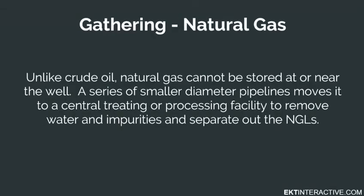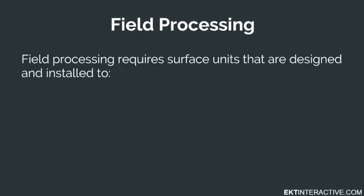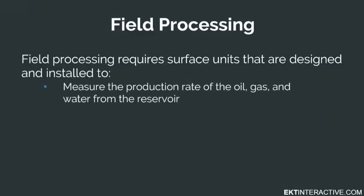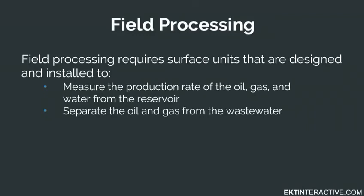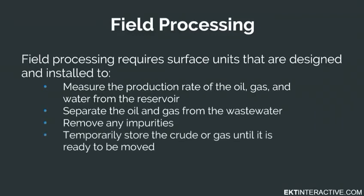Natural gas is a little different. Unlike crude oil, it cannot be stored at or near the well. A series of smaller diameter pipelines moves it to a central treating or processing facility to remove water and impurities and separate out the NGLs. The natural gas, primarily methane, can then enter a large diameter transmission pipeline to be moved to end users. Field processing requires surface units designed and installed to measure the production rate of oil, gas, and water from the reservoir, separate the oil and gas from the wastewater, remove any impurities, and temporarily store it until it's ready to be moved.